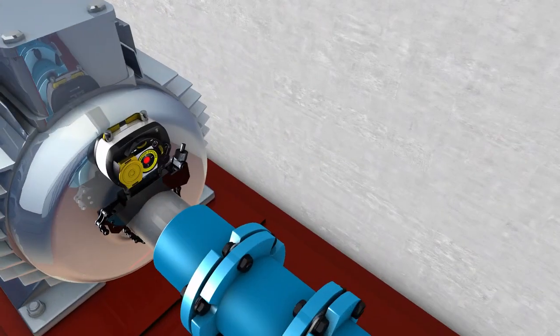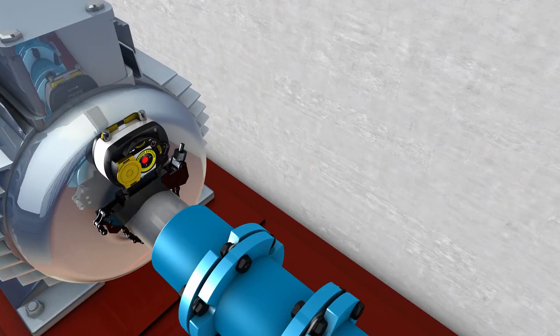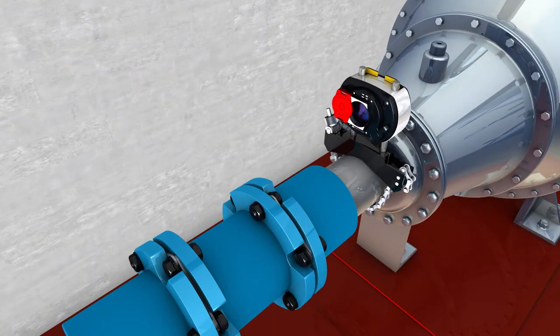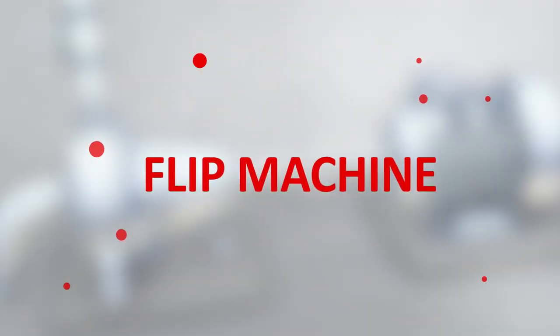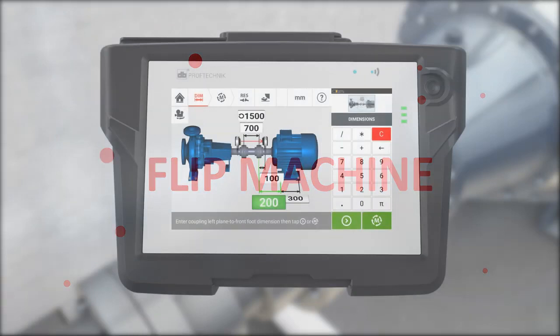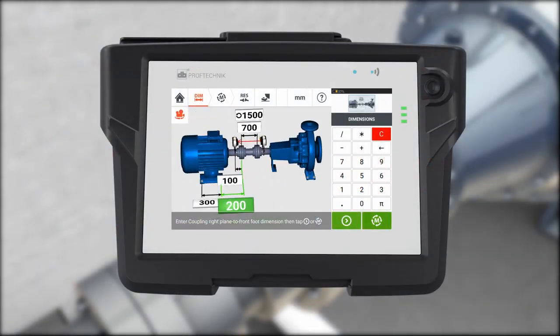During shaft alignment you may find yourself in the following situation: due to physical obstruction, the motor is on the left and the pump on the right. Use the flip machine function of your single laser alignment system to switch the machine view in an instant.